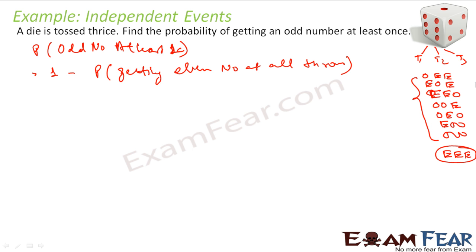Instead of calculating all these values, which is difficult, I would have to find all these combinations and all these options. Instead of doing this, I can easily find the probability of getting all even. One minus probability of getting all even is nothing but the probability of the complement set. When you say odd number at least once you have seven scenarios, but getting all even is only one scenario, so calculating one scenario is much easier.